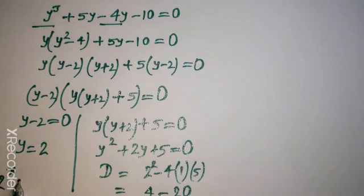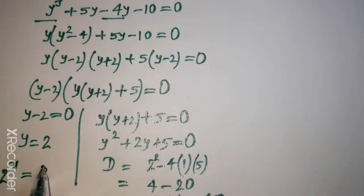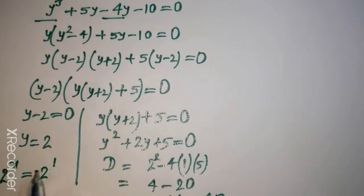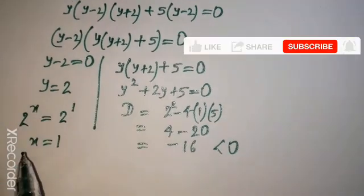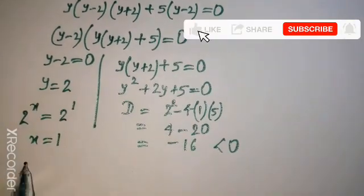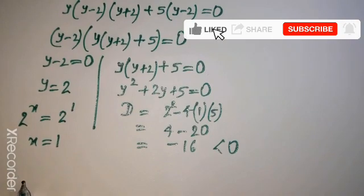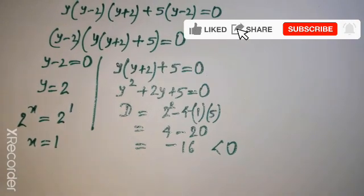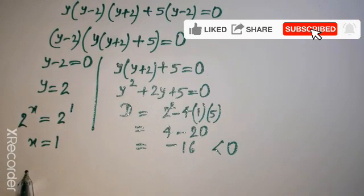So the value of y is 2. We had considered y equal to 2 to the power x, so 2 to the power x equals 2, which gives x equal to 1. Let us verify that x equal to 1 is correct.